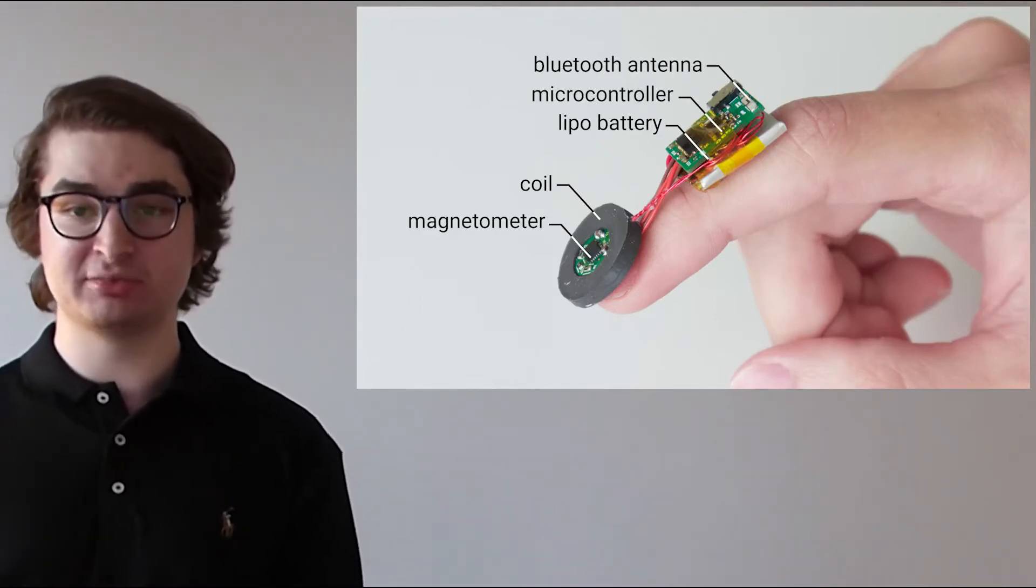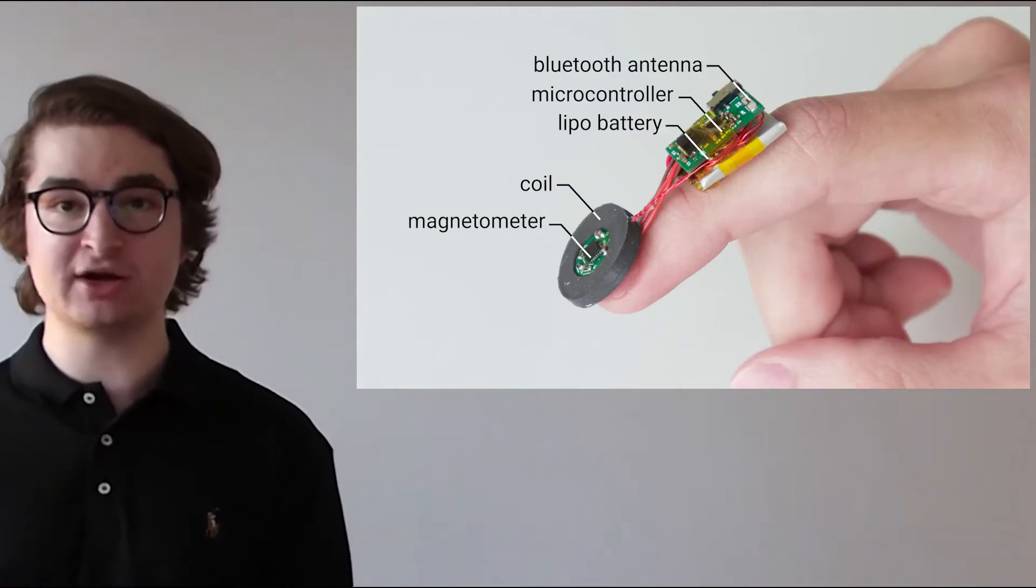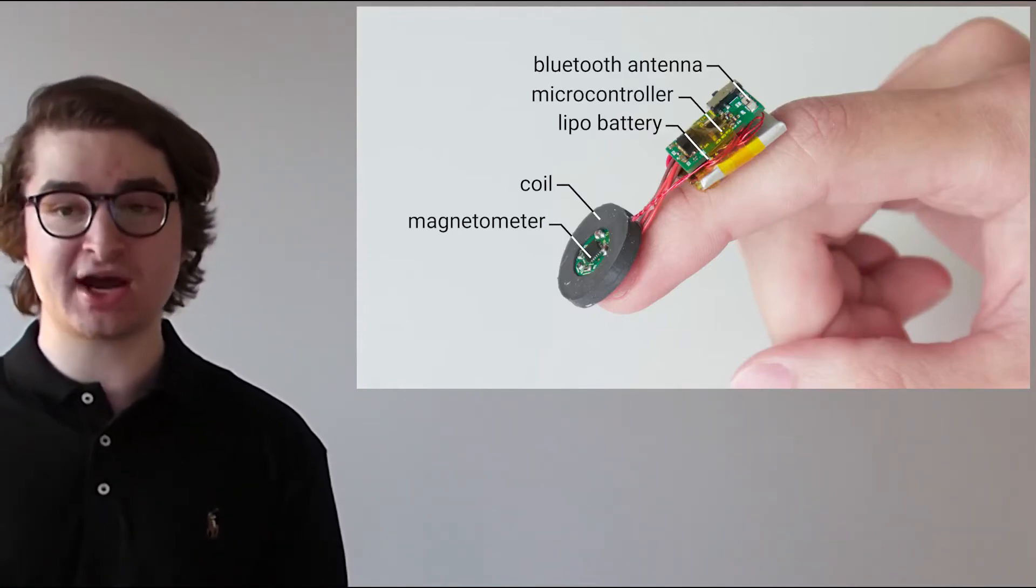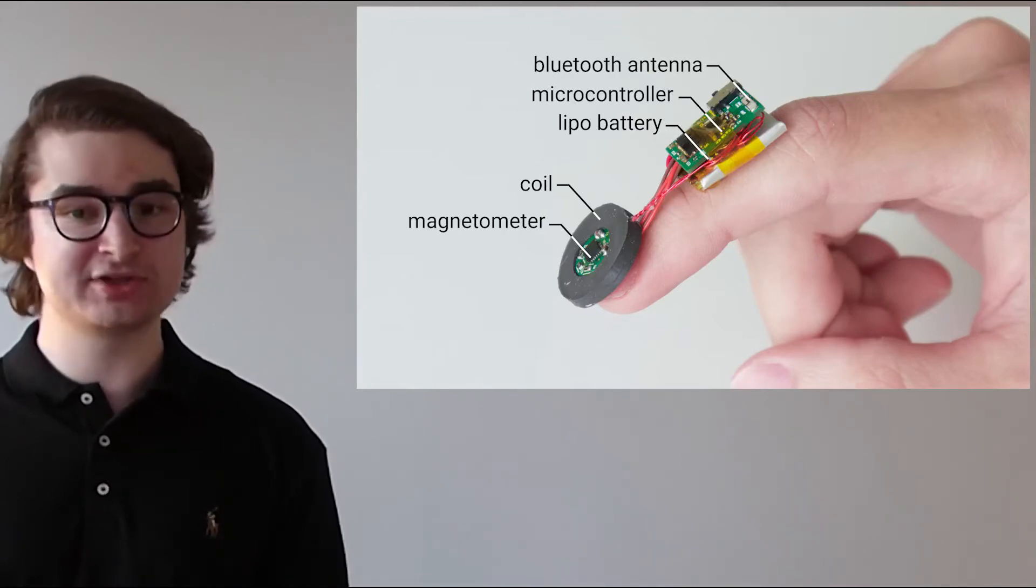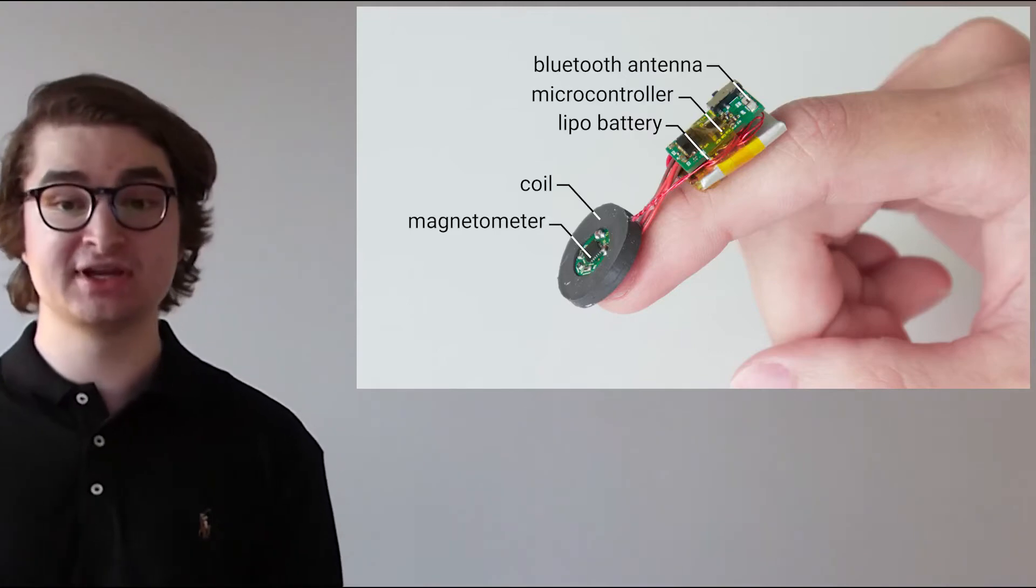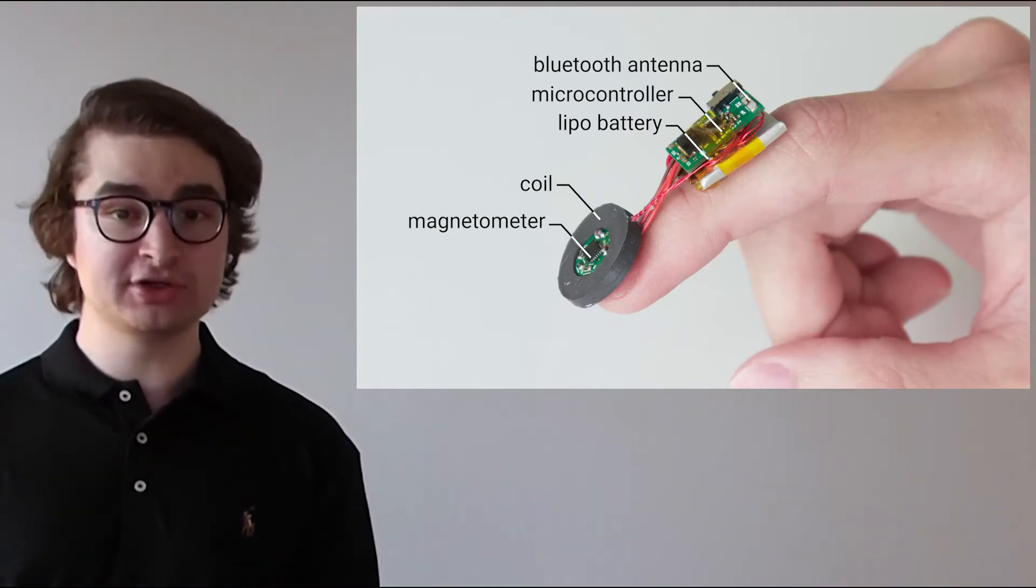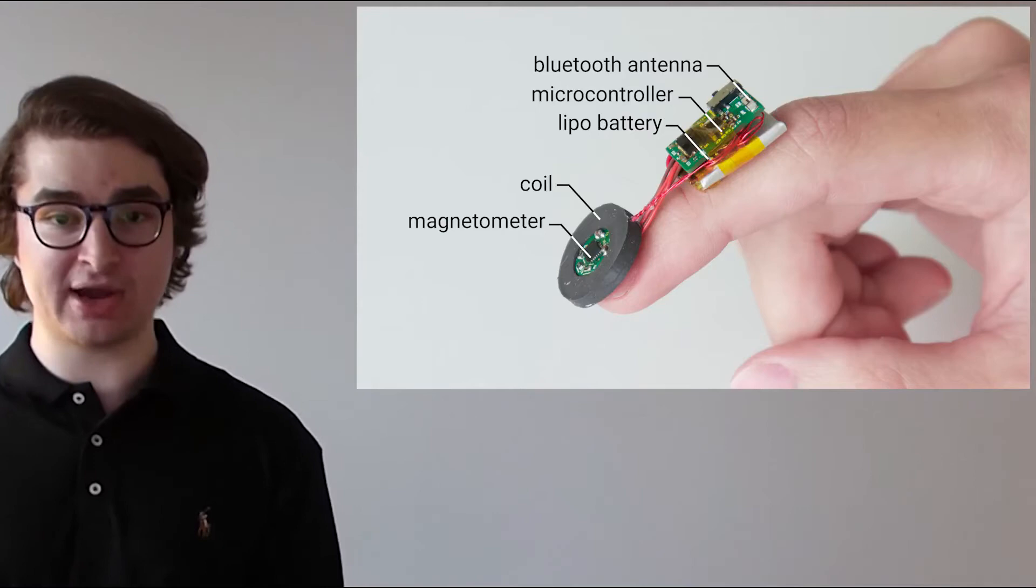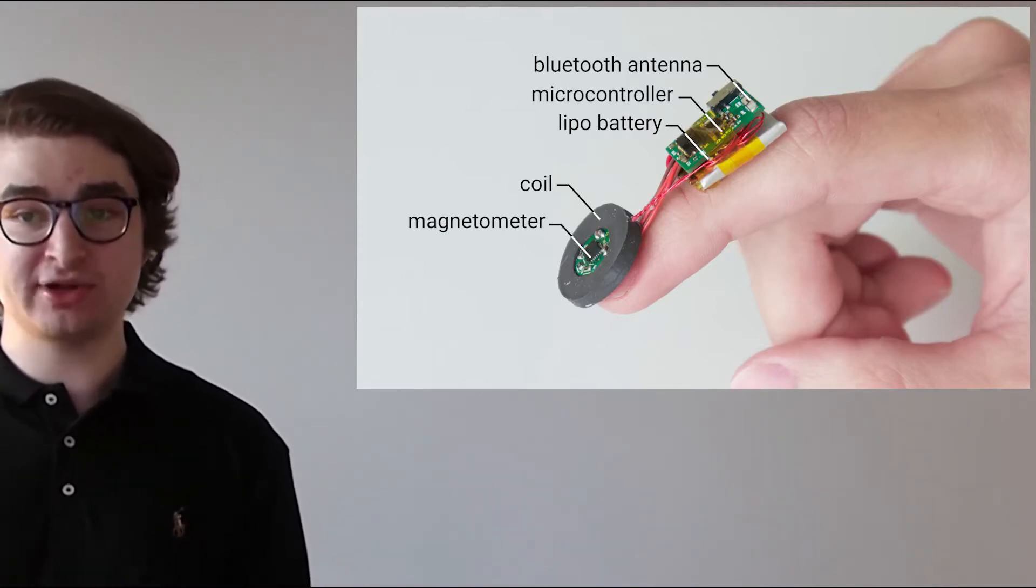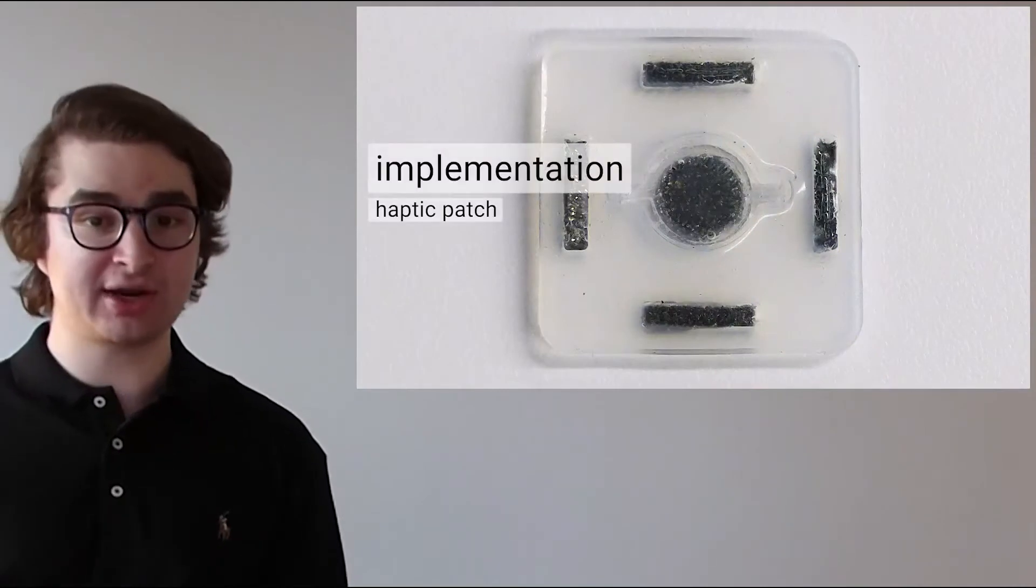Our coil is designed to provide strong magnetic forces while maintaining a compact, lightweight footprint that importantly does not occlude the user's finger pad because we believe it is important to allow the user to still feel their surroundings in addition to the patches. The final coil design weighs just 2 grams without battery. The user only wears one of these, yet they can actuate many haptic patches, which I'll describe now.